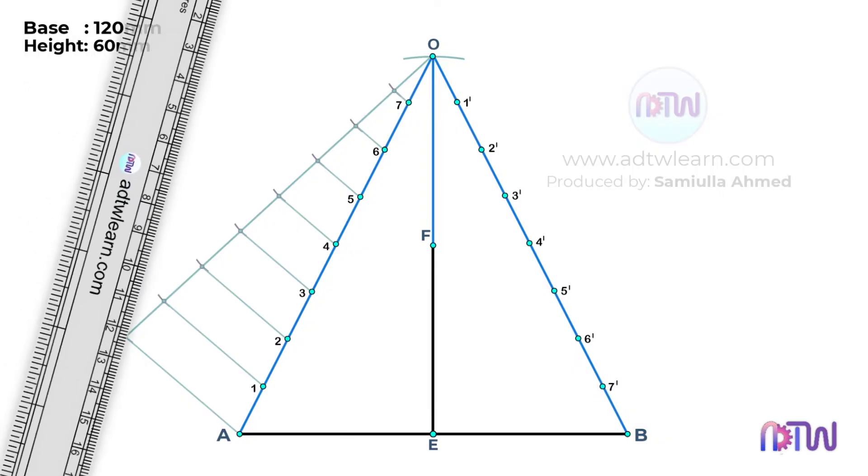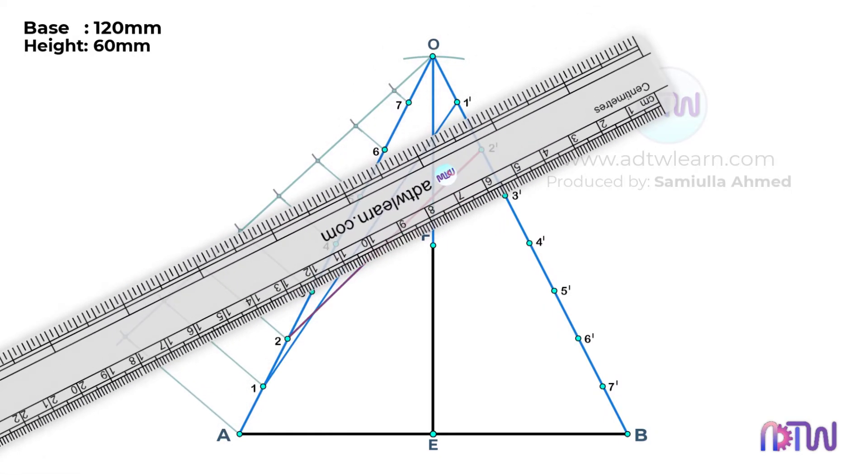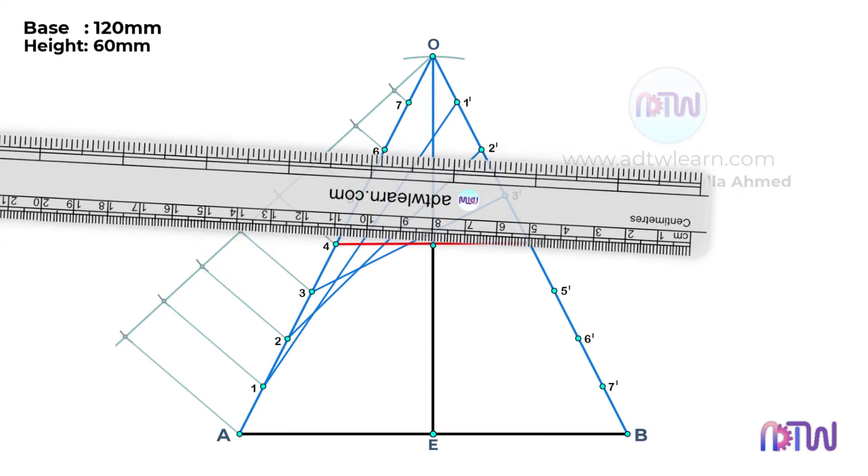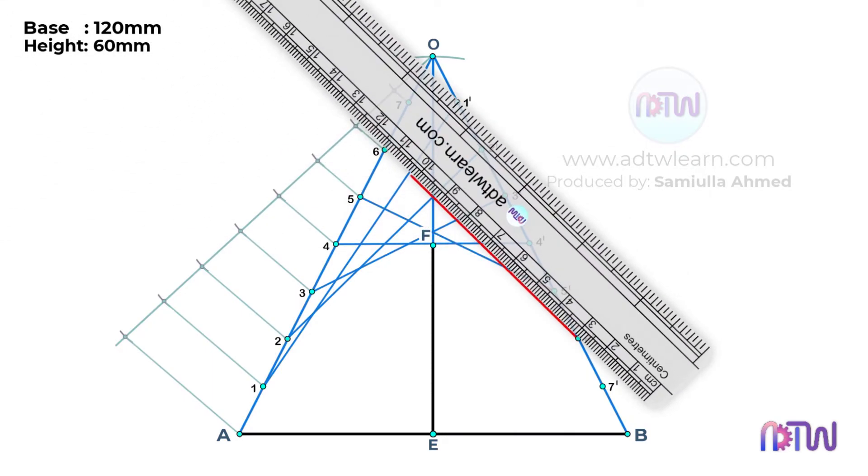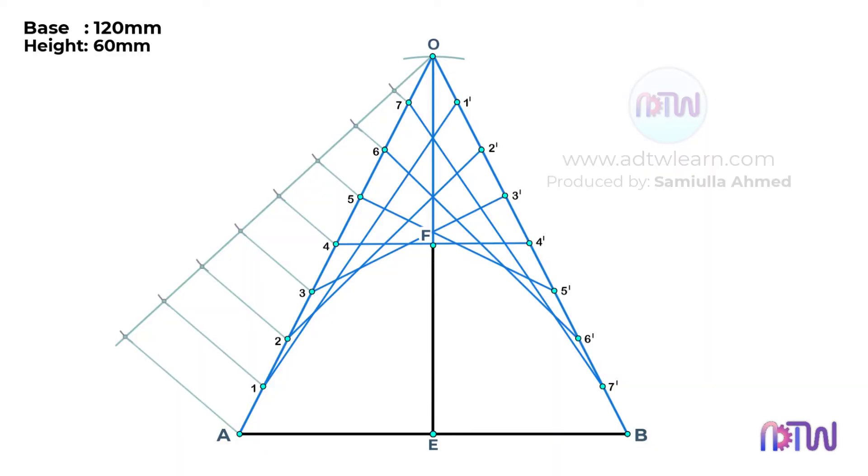Take a ruler and draw the lines. Therefore, we got the tangents touching the parabola. Now draw a smooth curve such that it touches each of these lines at these points. Since we got the required parabola.